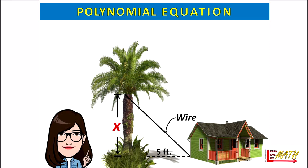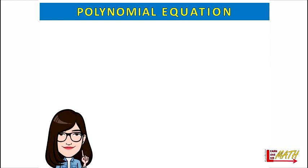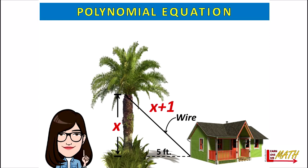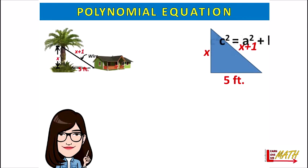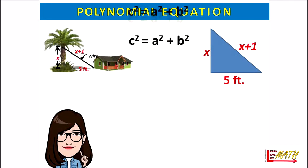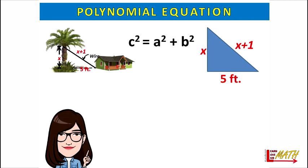Let x be the height the wire reaches on the tree, and let x plus one be the length of the wire. We will use the Pythagorean theorem since we can form a right triangle. So we have c squared equals a squared plus b squared, and our equation will be set up by substitution.